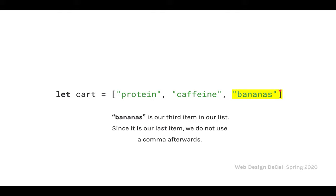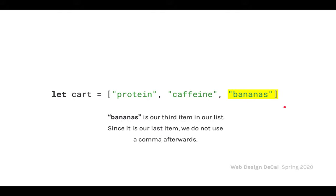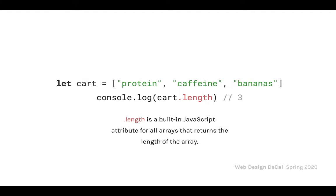There's a built-in JavaScript attribute for all arrays that returns the length of the array: dot length. So if we have our array cart with three items, cart.length returns 3. When we console.log cart.length it prints out 3. It's built-in, so you don't have to write a function yourself to find the length — just call .length after the variable name.